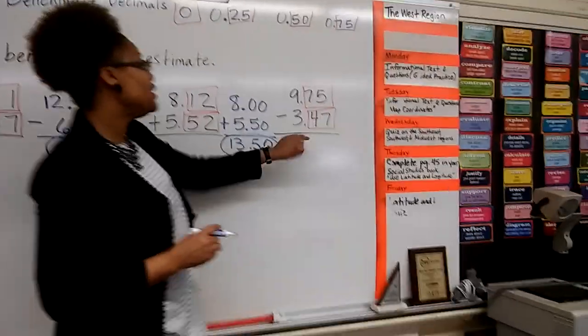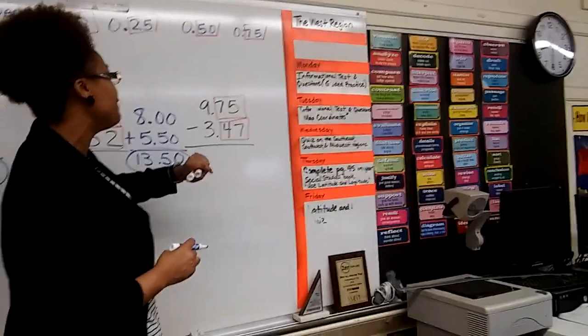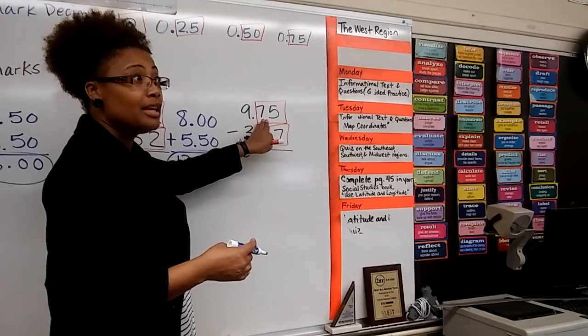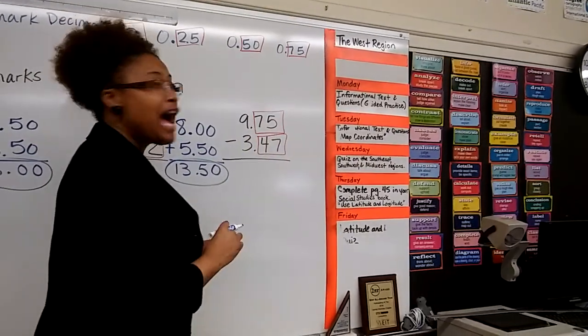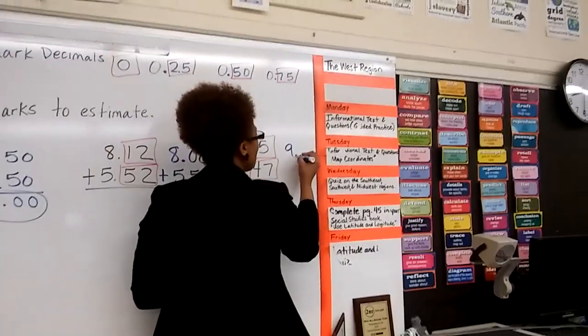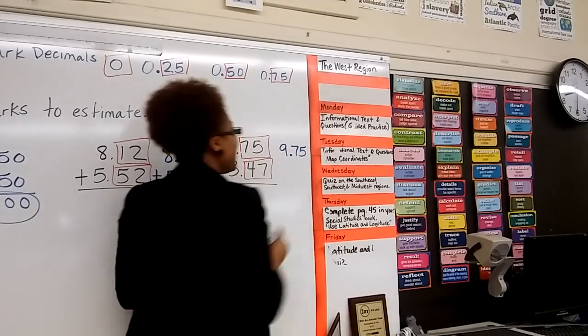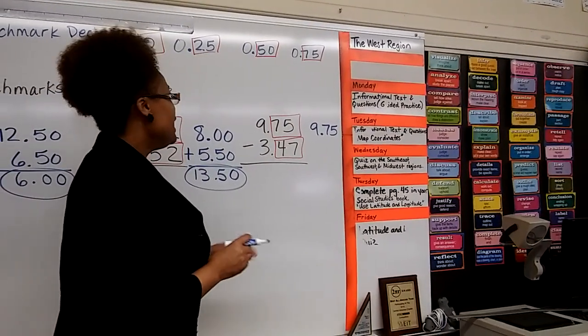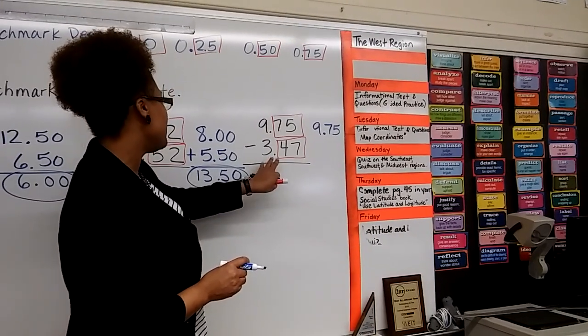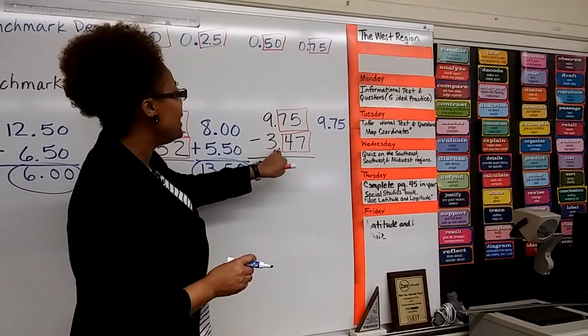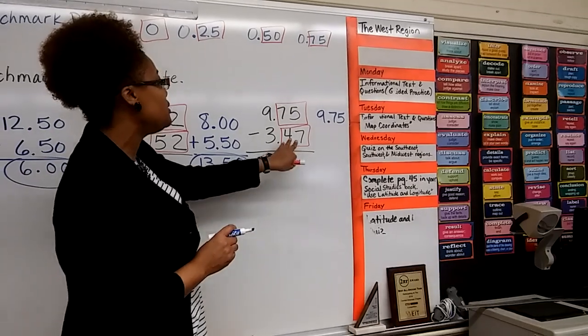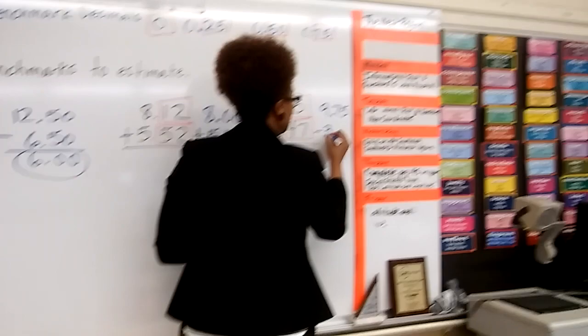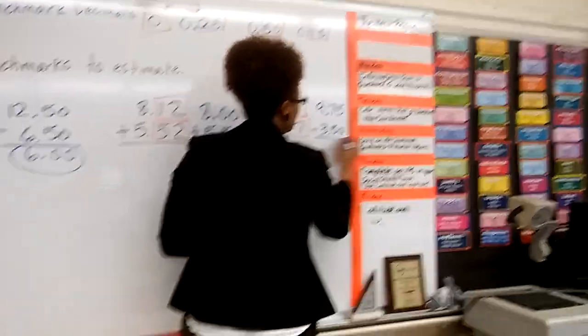All right, let's move on to 9 and 75 hundredths minus 3 and 47 hundredths. Now, the 75 hundredths is already a... A benchmark. Good job. So 75 hundredths is already a benchmark, so we keep 9 and 75 hundredths exactly like it is. Let's look at the second number. 3 and 47 hundredths. Which benchmark is close to 47 hundredths? 50 hundredths.